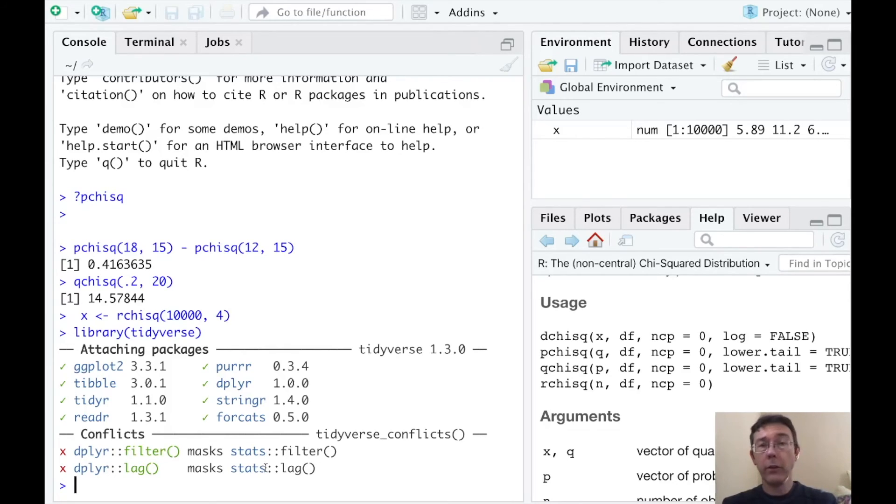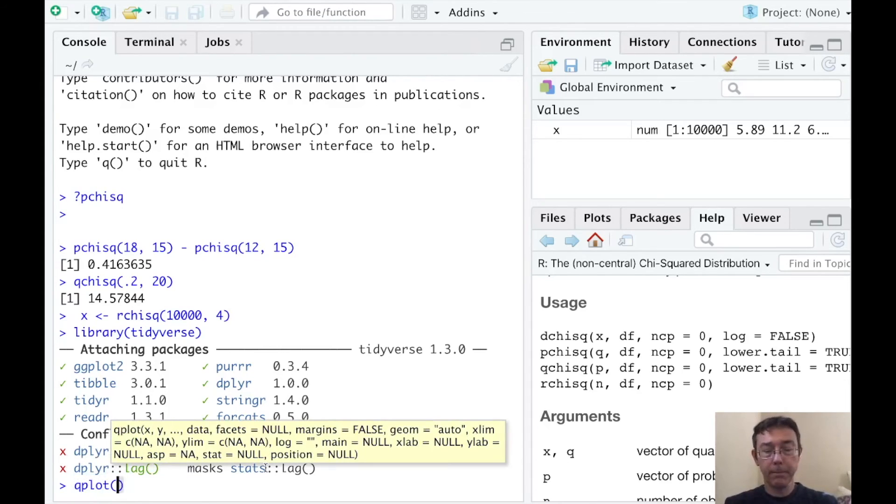Here, since I just have a single variable that I want to graph, I'm going to use the quickplot function, qplot, x. Let's explicitly specify that we want a histogram. And let's get a little bit of a distinction between the boundaries in our bins.